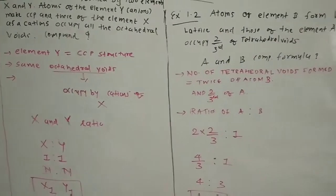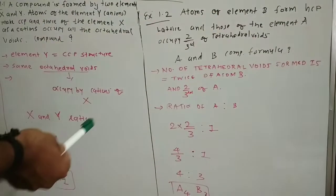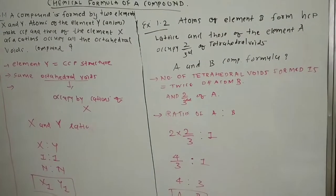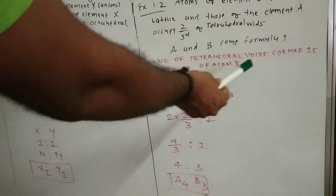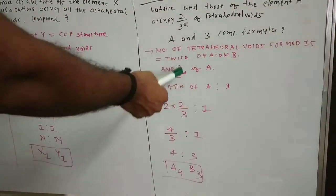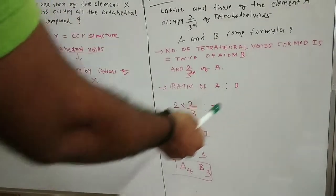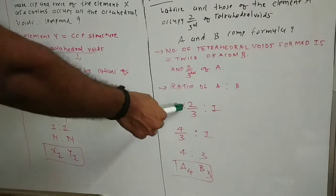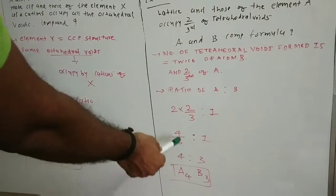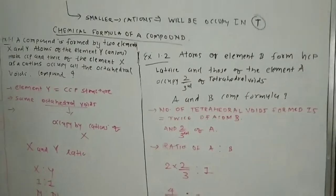The second problem: atoms of element B form HCP structure, and those of element A occupy 2/3rd of the tetrahedral voids. The number of tetrahedral voids formed is twice the number of B atoms. A occupies 2/3rd of those voids. So the ratio of A to B equals 2 multiplied by 2/3, which is 4/3, compared to 1 for B — giving a ratio of 4 to 3. Therefore, the formula of the compound is A₄B₃.